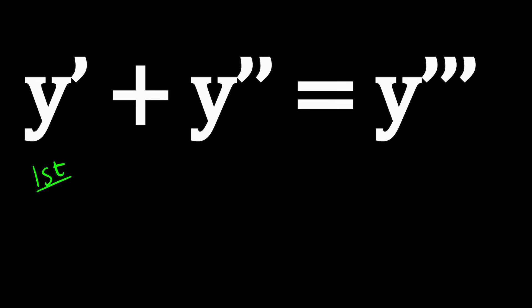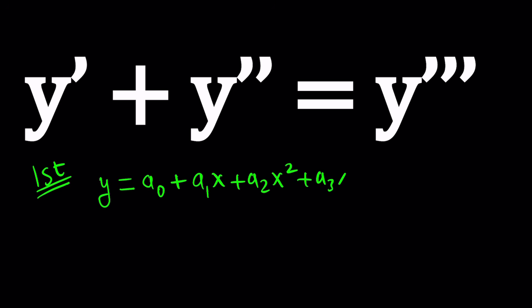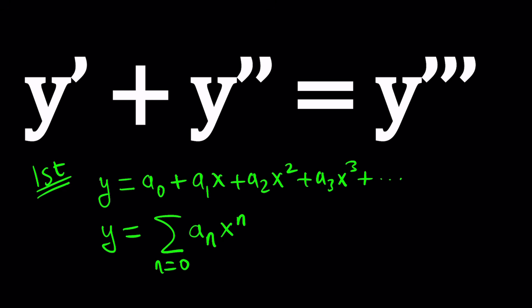For our first method we're going to use an infinite series to solve this problem. We're going to assume that y can be replaced by an infinite series — something like a₀ plus a₁x plus a₂x² plus a₃x³. You could call this a power series or an infinite polynomial. Infinite polynomials can be used to express several types of functions like e to the power x or cosine x. In sigma notation, we write this as the sum of aₙxⁿ from n equals 0 to infinity.